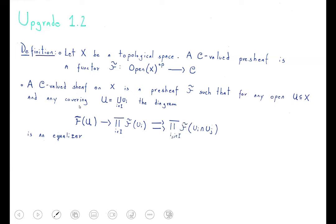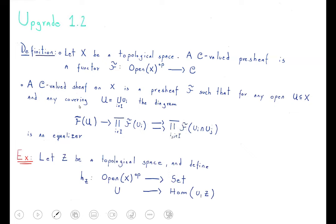A C-valued sheaf on our topological space is a presheaf such that for any open set and any open covering, the following diagram is an equalizer in category C. The intuition is that we can obtain global information from local information. For example, we define the presheaf sending an open set U to the set of continuous functions from U to the topological space — this captures the idea that a continuous function can be defined locally with good compatibilities to get the global output.